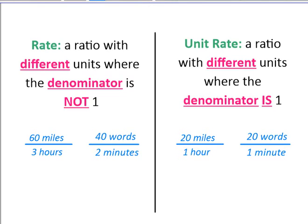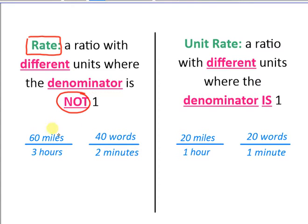What is the difference between a rate and a unit rate? A rate is a ratio with different units where the denominator is not one. The ratio is usually written as a fraction. So we'll have 60 miles over 3 hours, or 40 words over 2 minutes. The units are miles and hours — different units. The units are words and minutes — again, different units. The denominator is not one: here it's three, and here it's two.